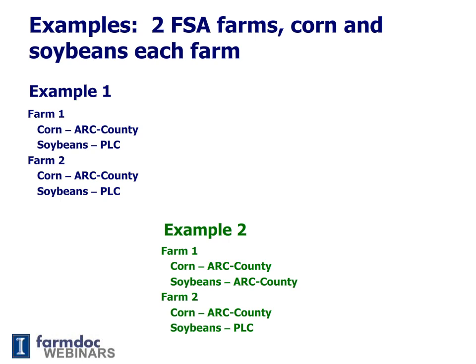Example two is a bit different than example one. In example two, on farm one both corn and soybeans are enrolled in ARC County, and on farm two corn is enrolled in ARC County while soybeans are enrolled in PLC. You could also switch farm two and have corn in PLC and soybeans in ARC County. There are a variety of different ways you can combine ARC County and PLC.